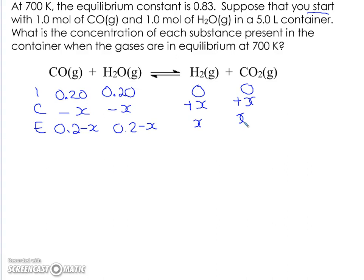Let's work that in with KC. If I get KC, I can find what X is. Once I find X, I can answer the question, which is what is the concentration of each substance? KC is equal to the product's concentration to their coefficients. I'm just leaving out states and sig digs because I don't have a lot of room.